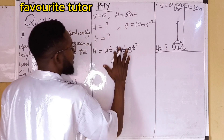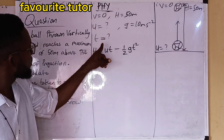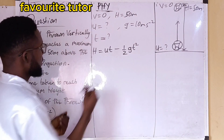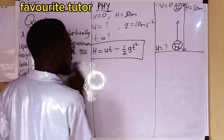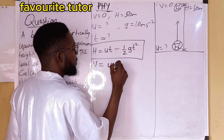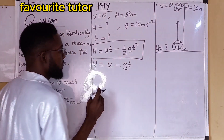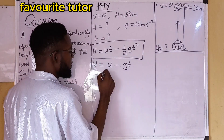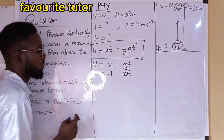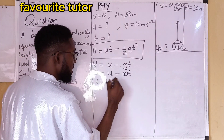Since the ball is going up against gravity, we use minus. We are looking for time, but we don't have the initial velocity — it is unknown. So let's first find the initial velocity using the equation: v = u − gt. At maximum height, v = 0, so: 0 = u − 10t. Rearranging, we get u = 10t.